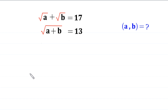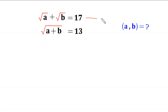Hello everyone, you are welcome. Today we solve this very nice system of equations: root a plus root b is equal to 17, and root of (a plus b) is equal to 13. Our job is to find all possible values of a and b. Let's call the first equation 1 and the second equation 2.